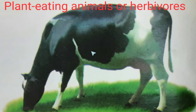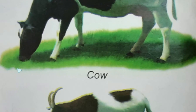Different animals have different eating habits. Some animals eat only plants. Cow, buffalo, goat, sheep, and horse eat grass. A rabbit eats carrots. A monkey loves to eat bananas and nuts.